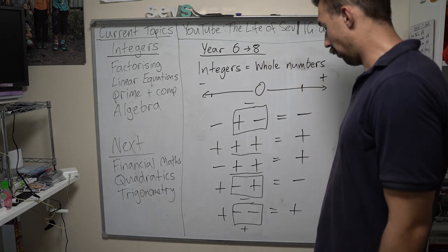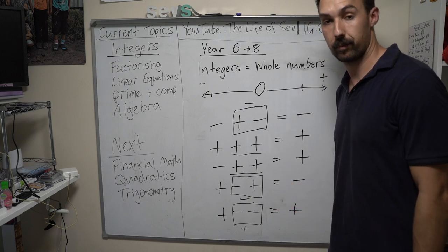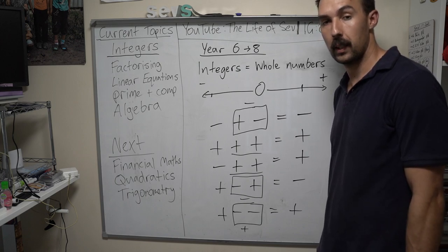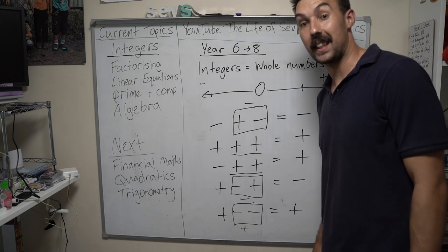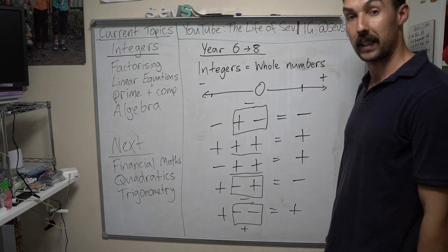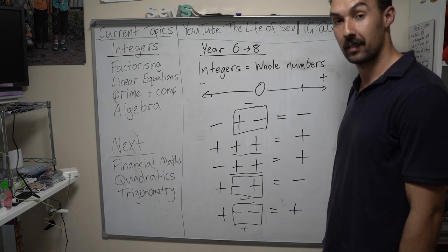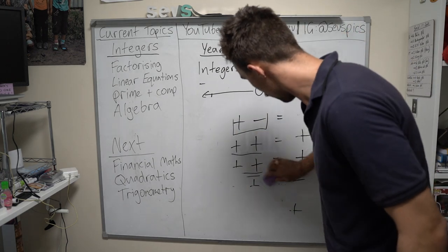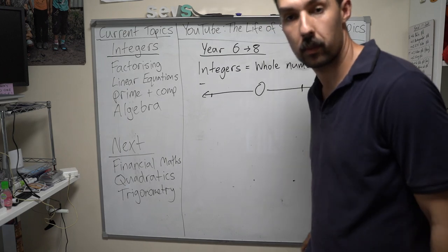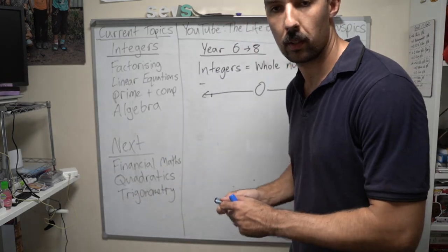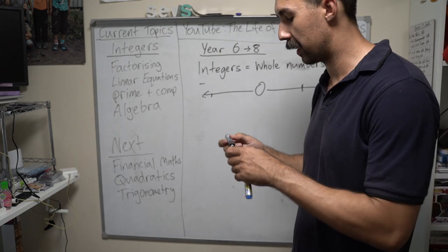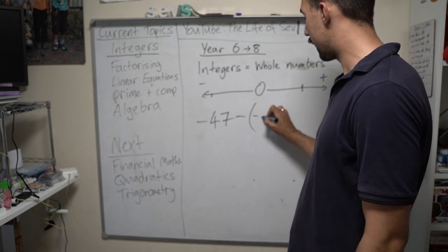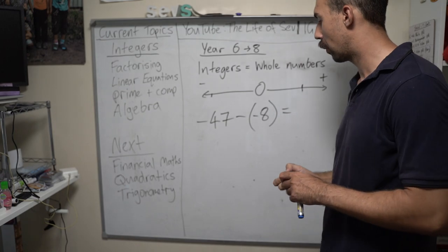That's it — there's some more notes for you. And then if it's a negative take away a negative, what do you think it'll be? Let's have a look. Positive. So let's have a look: if we have negative 47 and we take away negative 8, what do you think the answer is?